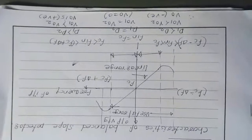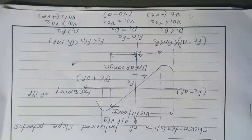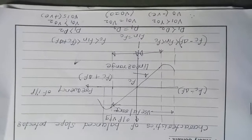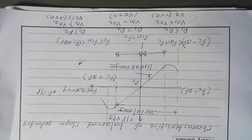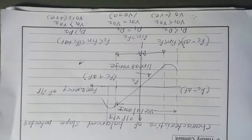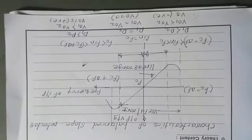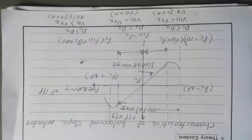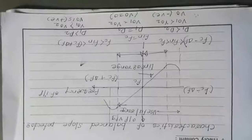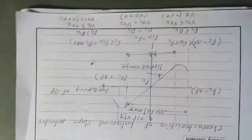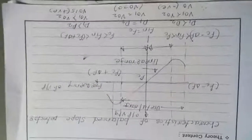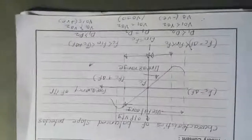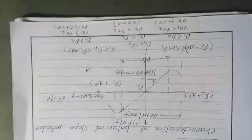This is all about the balanced slope detector. By using the balanced slope detector, we finalize the inefficient operation of the simple slope detector. The remaining two types related to the FM detector we will see afterward.